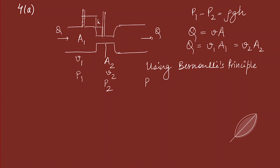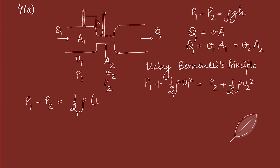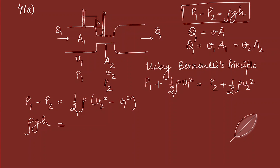Using Bernoulli's equation: p1 + ½ρv1² = p2 + ½ρv2², so p1 minus p2 equals ½ρ(v2² - v1²). This equals ρgh from our manometer relation, giving us: ρgh = ½ρ·v1²·(v2²/v1² - 1).